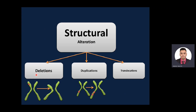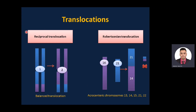Structural abnormalities or aberrations include deletions, duplications, and translocations. Deletions mean a part of the chromosome or a sequence of DNA is lost during DNA replication — the genetic material is missing in that area. The opposite is duplication, where a part of a chromosome or DNA sequence is duplicated during DNA replication.